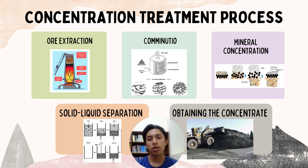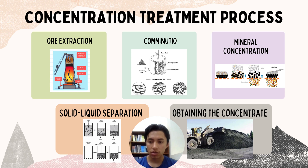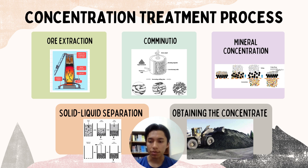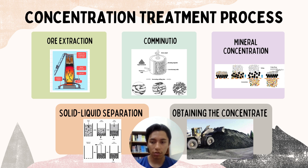The final step is obtaining the concentrate. After passing through the concentration stages, the process culminates with obtaining the concentrate, which is the final product of higher purity. This concentrate then goes to smelters or chemical plants to obtain the metal in its final form as bars or ingots.